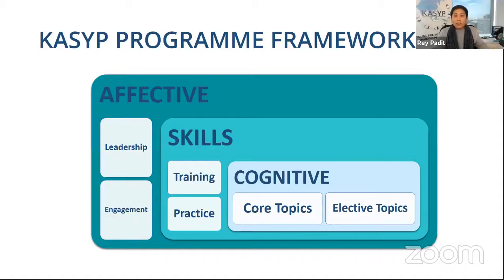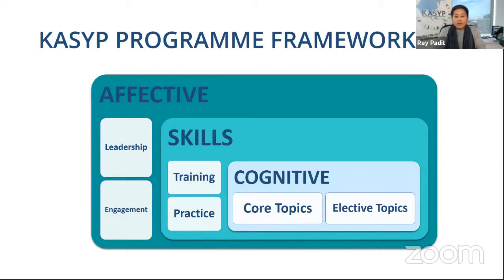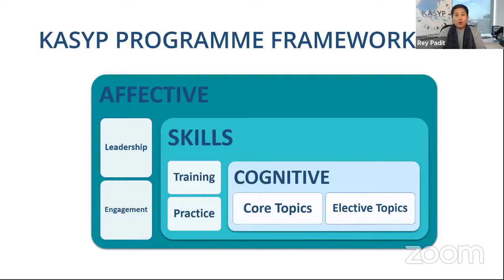In terms of program framework, cognitive topics are divided into core topics and elective topics. Each module — Knowing, Acting, Serving, and Connecting — has core topics and elective topics that participants can choose based on what is most relevant for their careers. For skills, we have political skills training. Skills will only bear fruit if you keep practicing them. The affective part of the program focuses on developing and nurturing democratic values and principles that translate into your democratic leadership style.